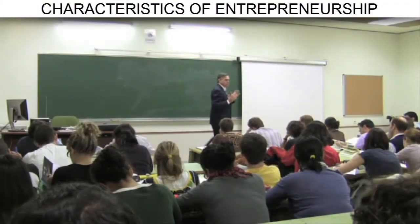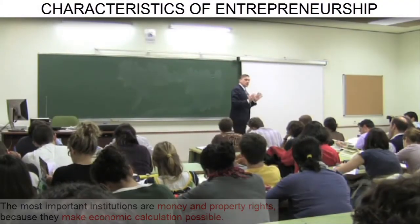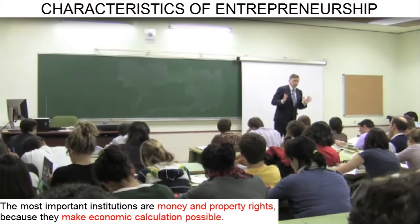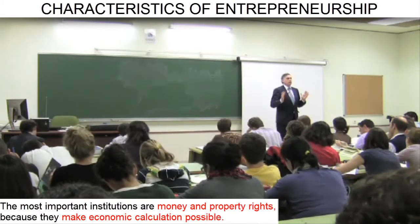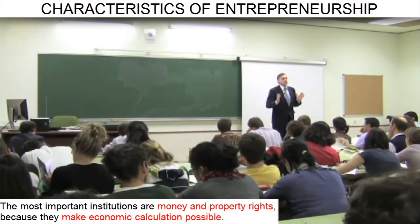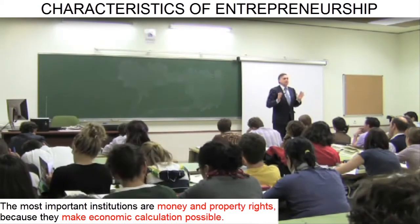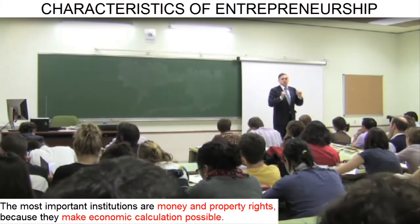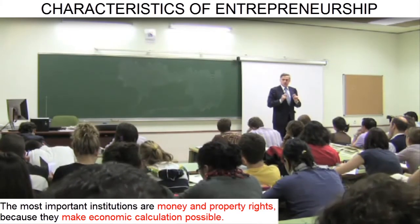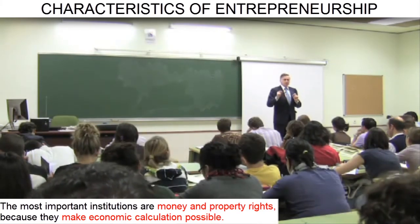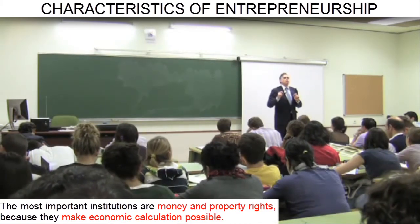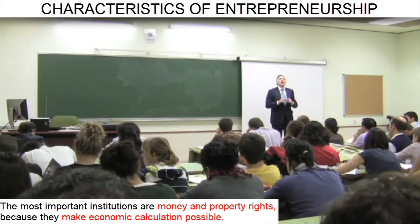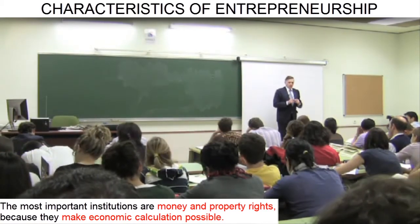Of these institutions, the most important are money and property rights. As we will see, these institutions permit what we will call market prices to take shape in exchanges. Market prices are historical ratios of exchange, and they make economic calculation possible.